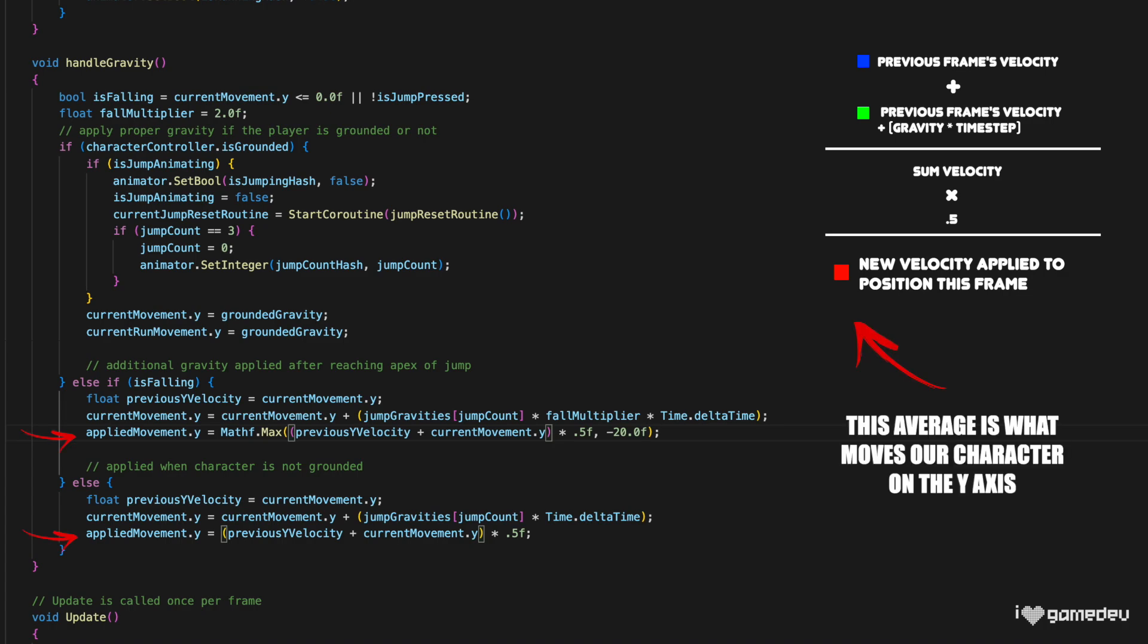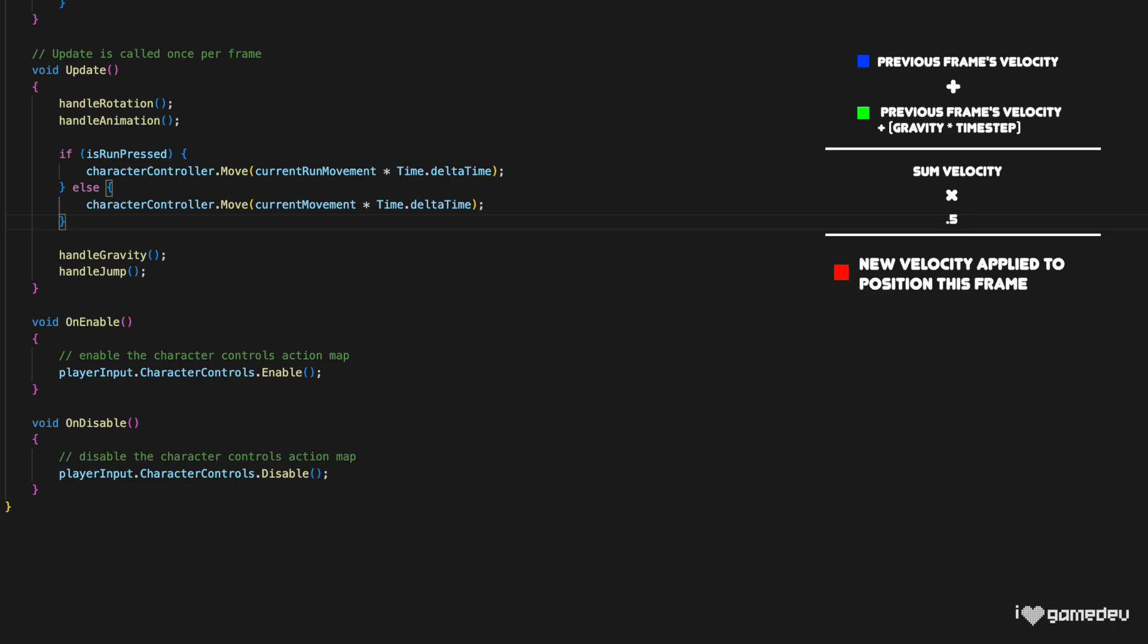We will need to use this appliedMovement variable in the character controller's move function to actually move the character. So in our update function, we can see that we are either using the currentRunMovement or currentMovement variables with the character controller's move method. But we now need to use our appliedMovement variable because it's storing the average y velocity that needs to be applied to the character.